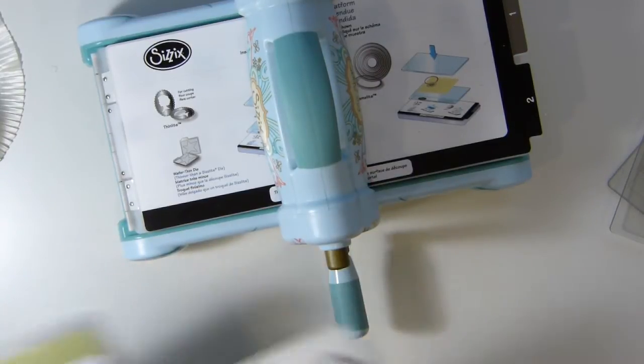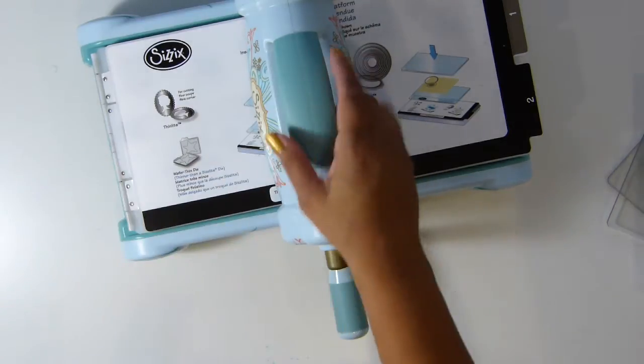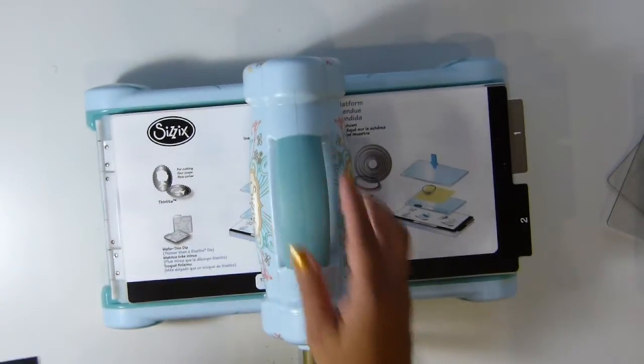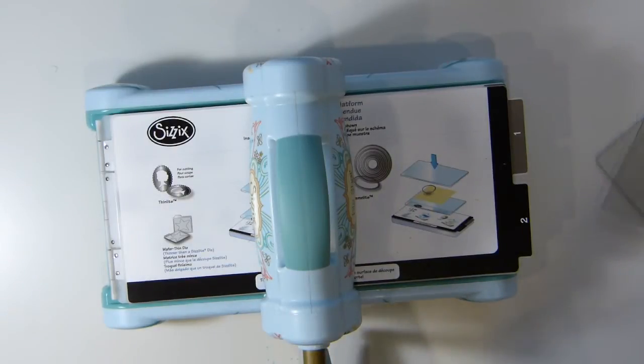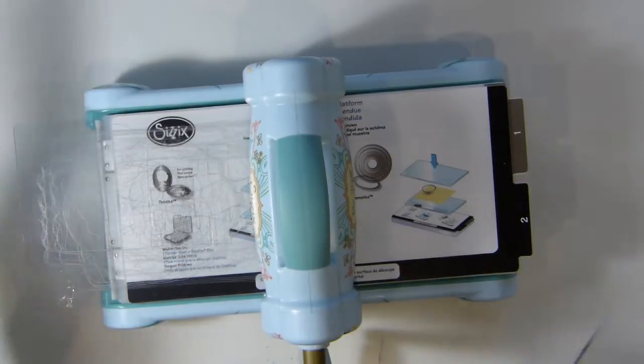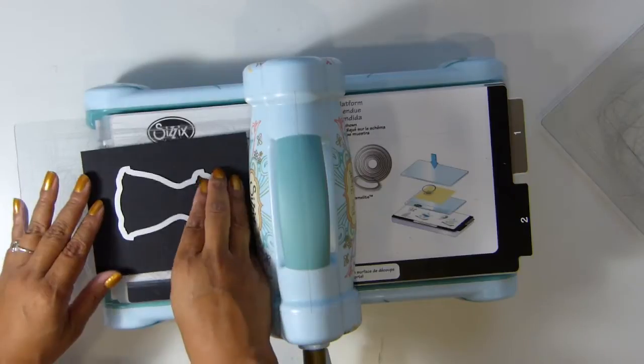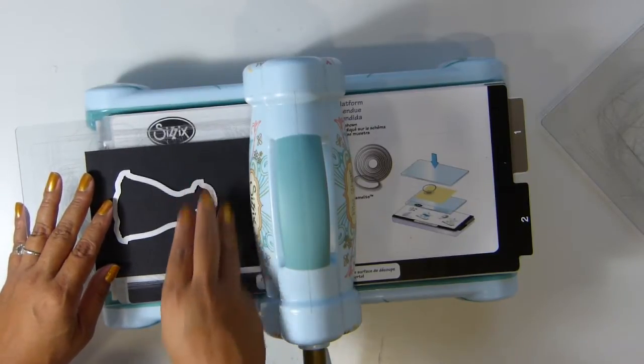The first step is going to be cutting the Dress Form, so I'm going to be using my Big Shot. I'm going to use my acrylic plates and I'm going to use black cardstock to cut the dress.